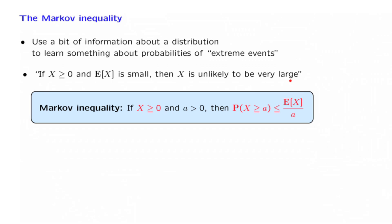Here's what it says. If we have a random variable that's non-negative, and you take any positive number a, the probability that the random variable exceeds that particular number is bounded by the ratio E[X]/a. If the expected value of X is very small, then the probability of exceeding the value a will also be small. Furthermore, if a is very large, the probability of exceeding that very large value drops down because this ratio becomes smaller.